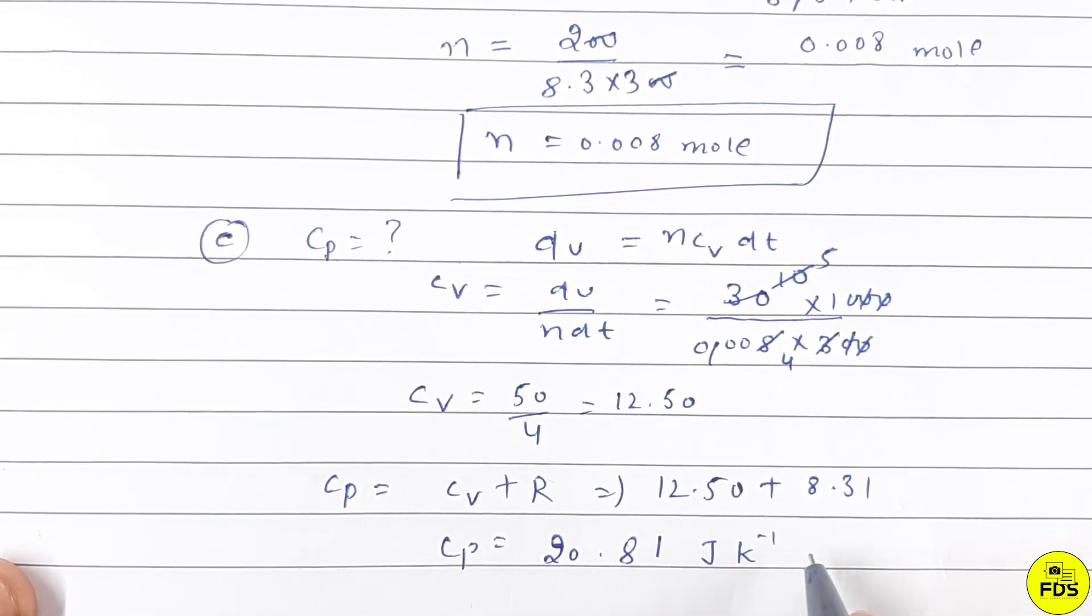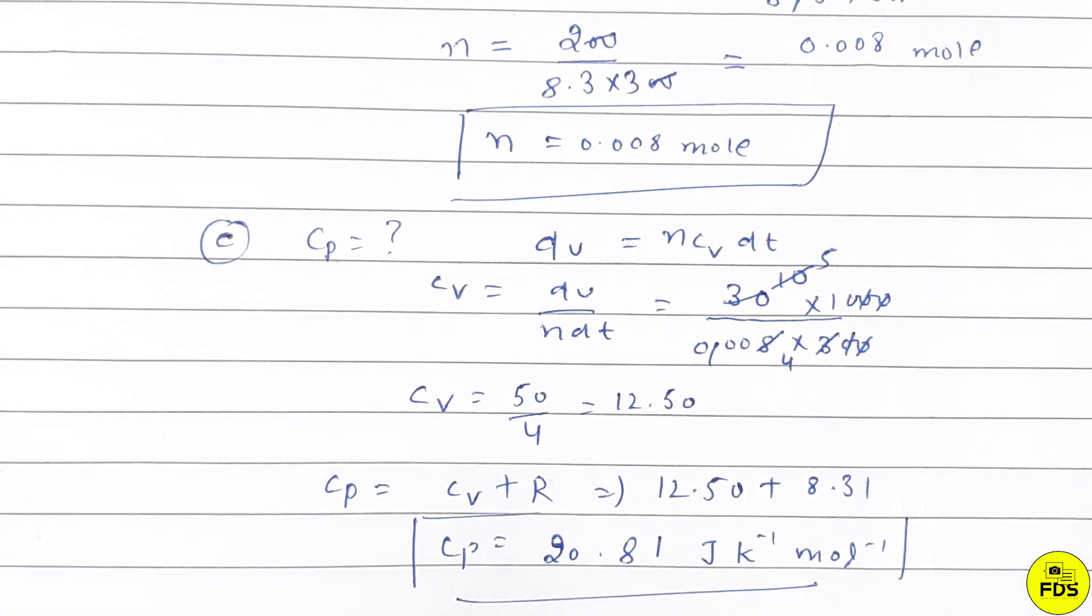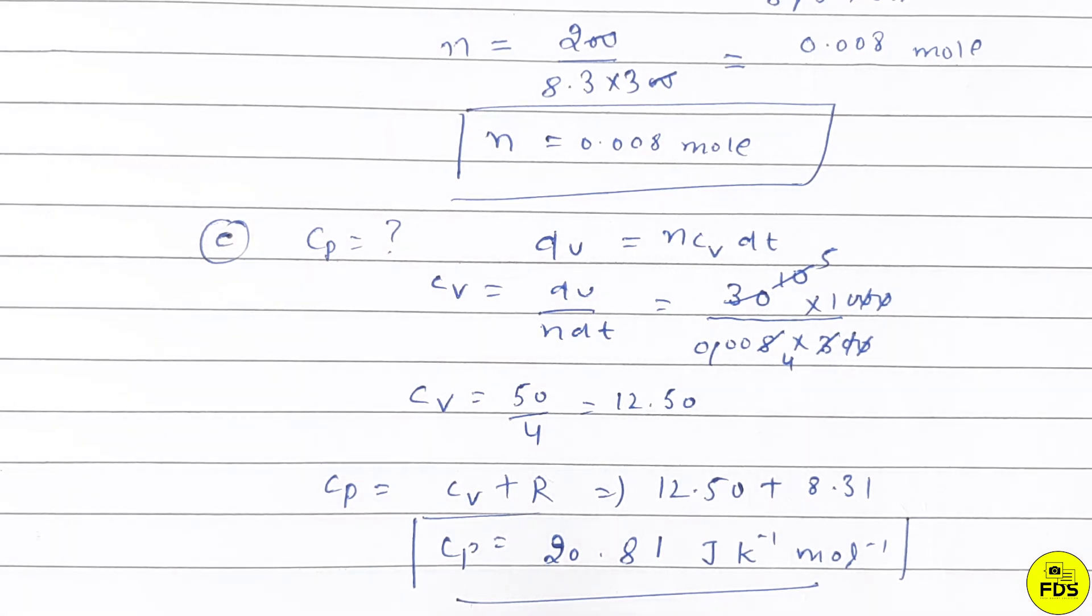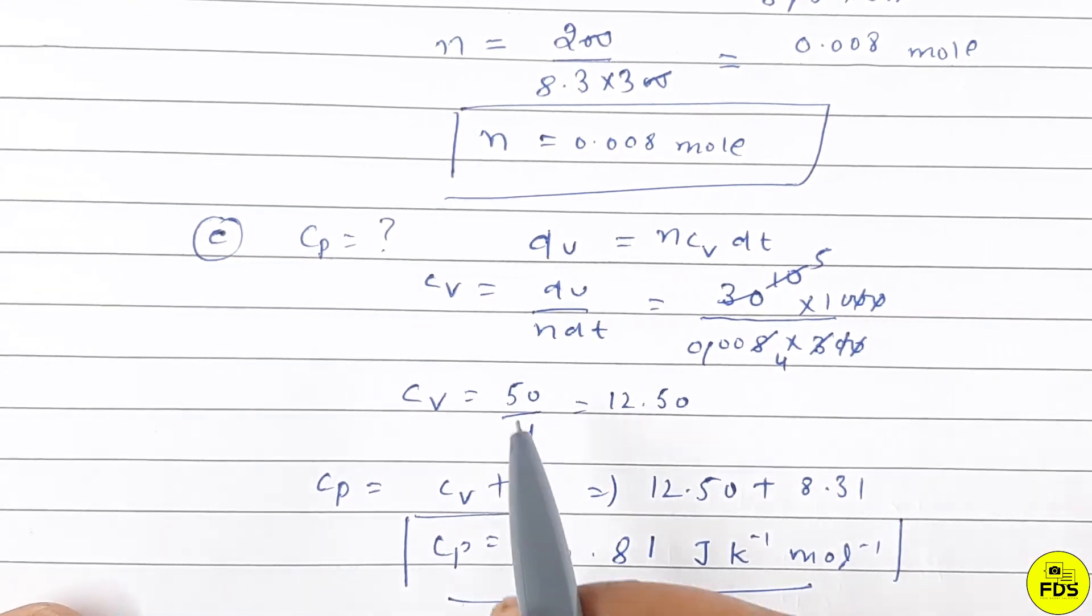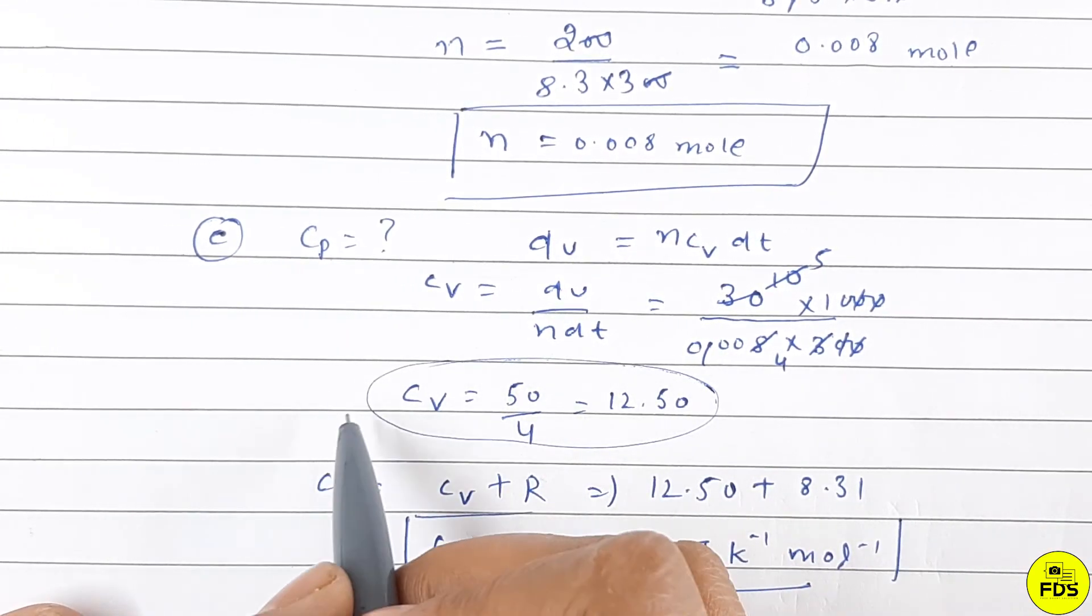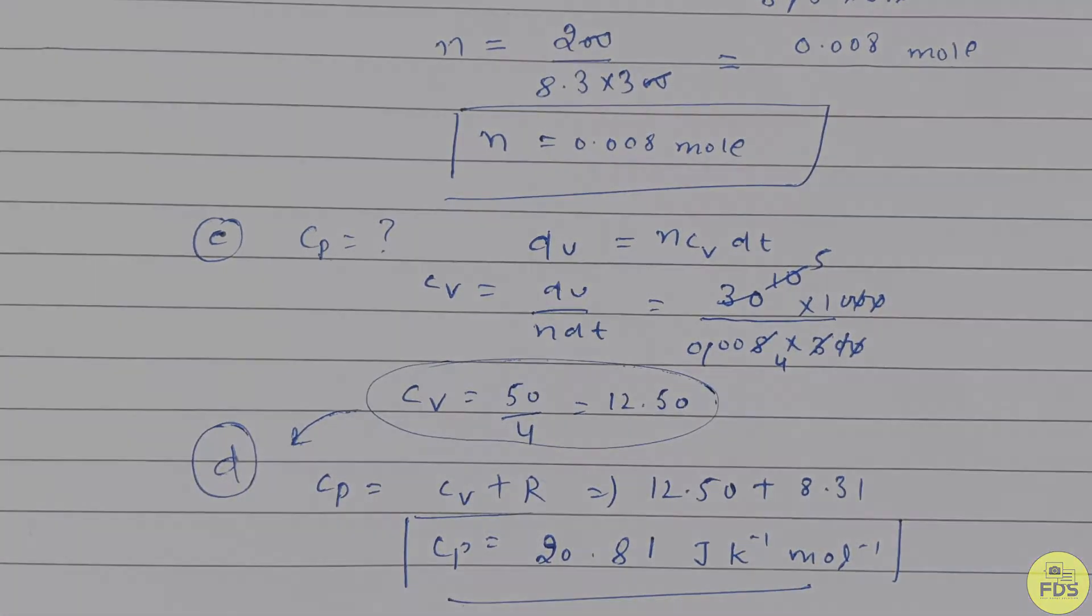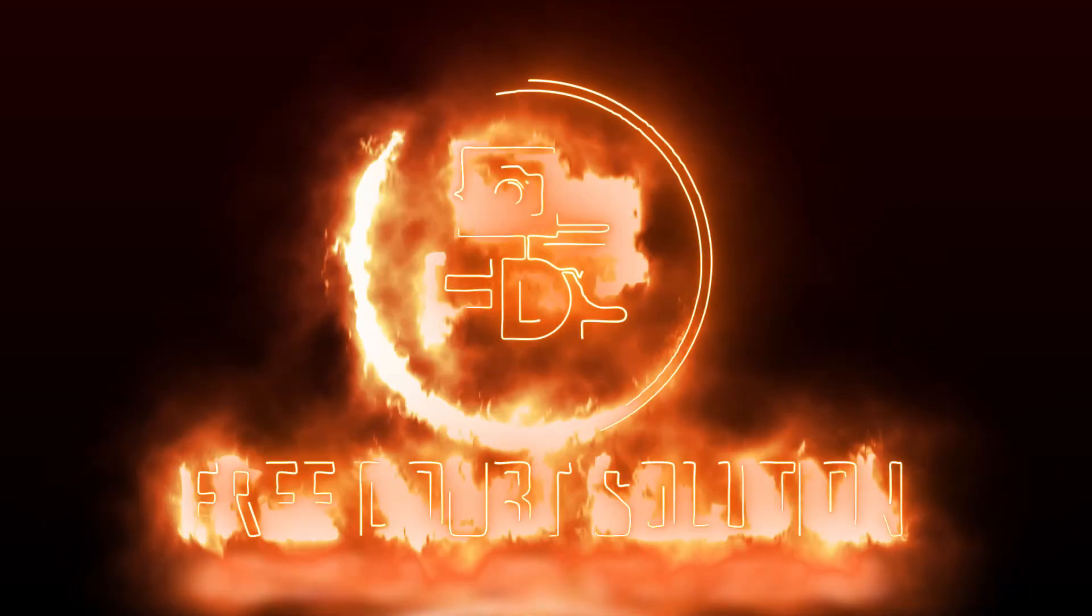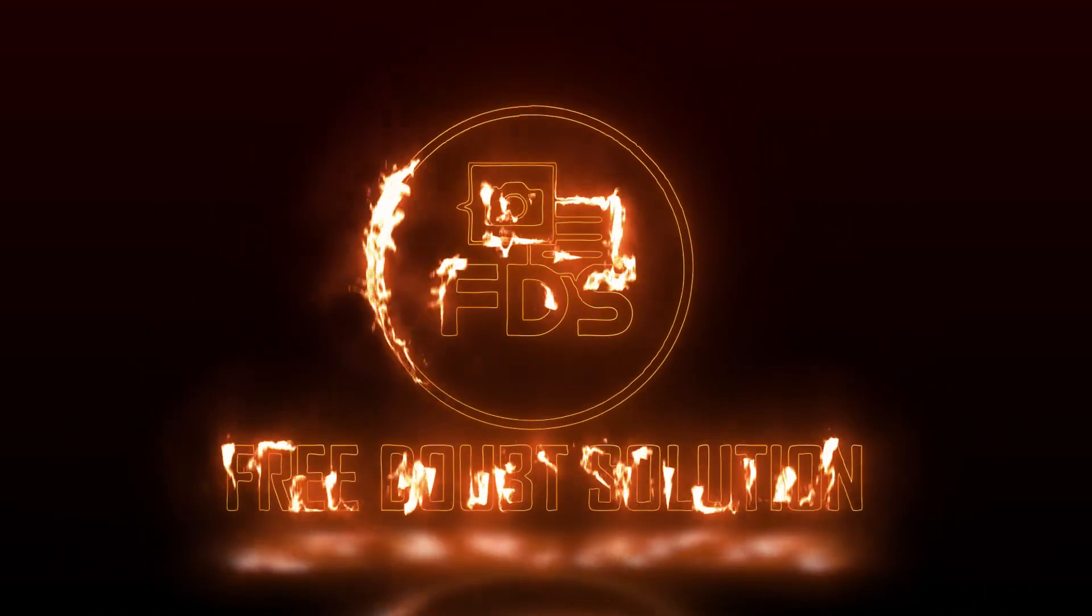In part D they asked for the molar heat capacity CV at constant volume. We already found CV in the previous part, which is 12.50 J/(K·mol). This is the easiest solution.